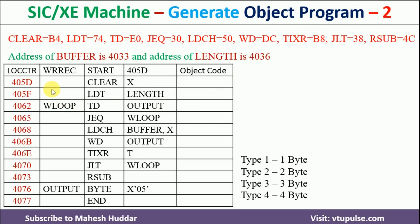We will discuss first how to assign the location counter for each and every instruction. The first instruction's location counter is always equivalent to the value mentioned in the operand field, that is 405D. If you want to calculate the location counter for the next instruction, you have to check what type of instruction it is — type 1, 2, 3, or 4. If it is type 1, add 1 byte; type 2, add 2 bytes; type 4, add 4 bytes. If a register is involved, it is type 2. If a plus sign is written before the opcode, it is type 4; otherwise it will be type 3.